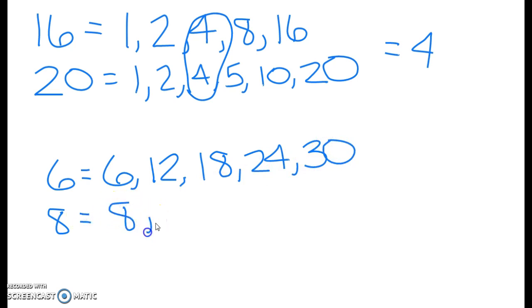We have 8, 16, 24. And at this point we know that our least common multiple for 6 and 8 is the number 24.